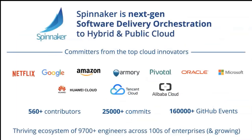Spinnaker is a next-gen software delivery orchestration tool with contributors from Netflix, Google, Amazon, Pivotal, Oracle, Microsoft, Huawei, Tencent, and Alibaba. There are over 560 individual contributors, over 160,000 GitHub events, and over 25,000 commits — just in the last year. It's a thriving ecosystem of 9,700 engineers across hundreds of different enterprises and continuously growing.